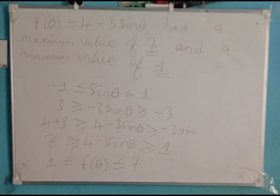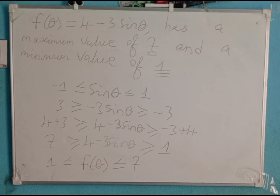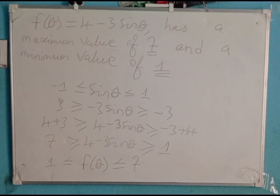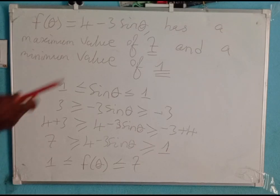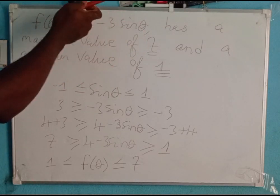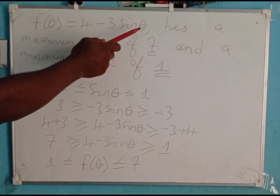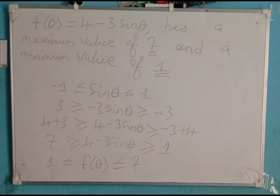It simply means if we had to sketch the curve of the function f of theta equal to 4 minus 3 sine theta, the curve of this function will not go above 7, and the curve will not go below 1 on the y-axis.